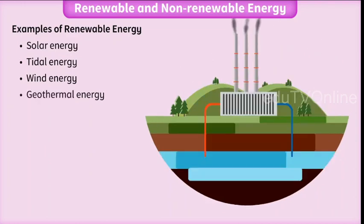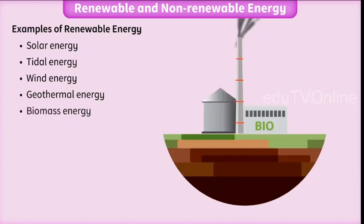Geothermal energy: The volcanic heat of the earth is used to produce steam when cold water is pumped inside. The steam is then used to move the turbine, which generates electricity. Biomass energy: The dead and decayed waste of plants and animals is called biomass, which produces biogas. Biogas is a fuel used to generate electricity.